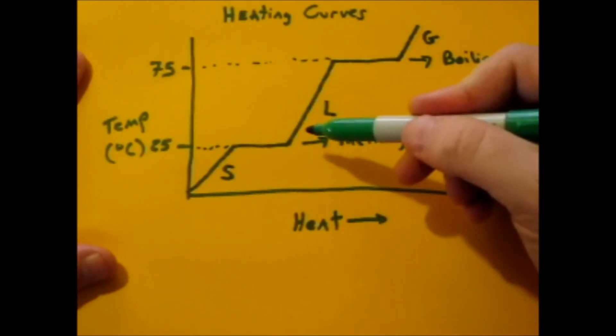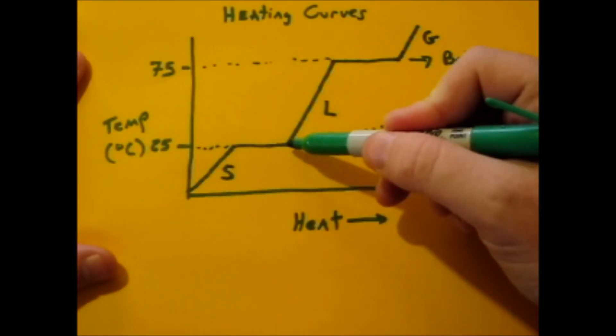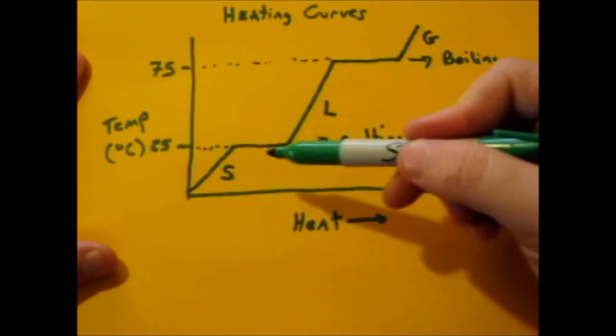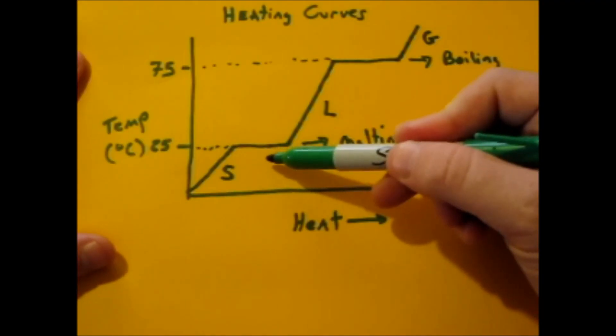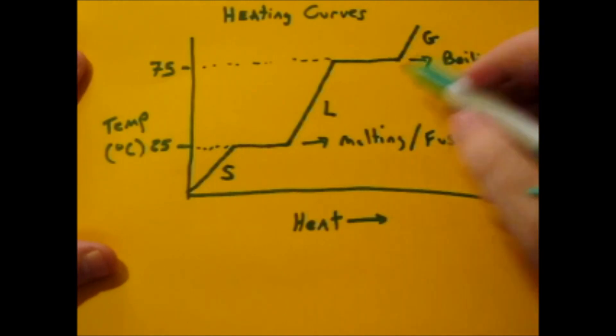Now most phase diagrams, there's usually an error in them. That didn't really make it too obvious. The lower plateau is supposed to be shorter than the upper plateau. This is because the energy required to melt or fuse is going to be less than that of the heat of vaporization, the energy to boil. And this line should be much longer than this line.